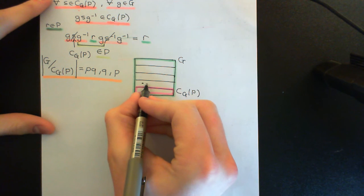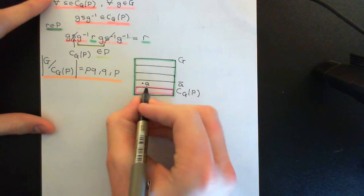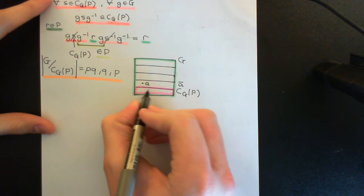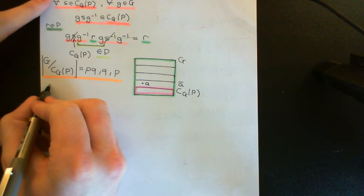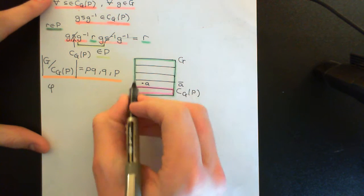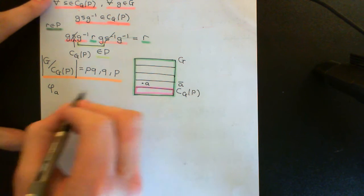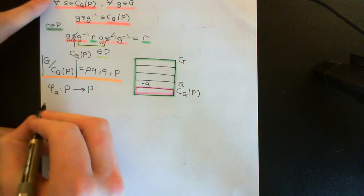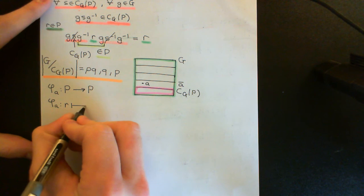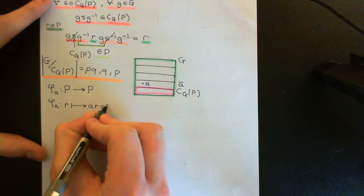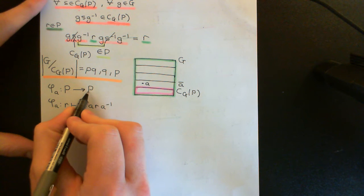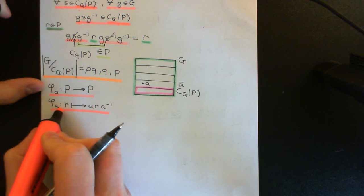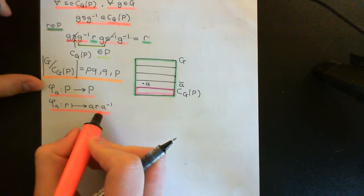Let's say we have a coset containing an element, little a. This is the coset Ā, the coset that contains a. Then all the other elements in here are of the form a times an element of the centraliser of P in G. What we can do is create an automorphism of capital P for every single element of capital G. For little a, I'll consider the mapping φ_A, which will be an automorphism of the subgroup capital P onto itself. It will map all little r in capital P onto what they are after they've been conjugated by little a. We conjugate the entire subgroup, and we know we get the entire subgroup back because it's a normal subgroup. If a was an element of the centraliser of P in G, it would just represent the identity automorphism.